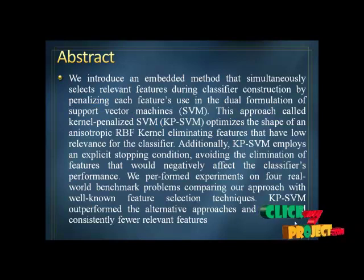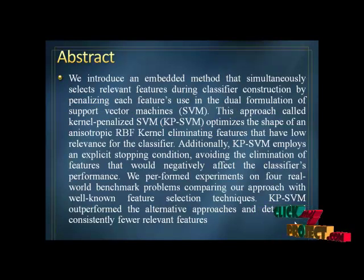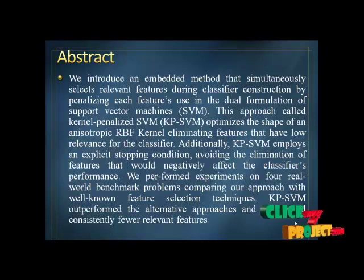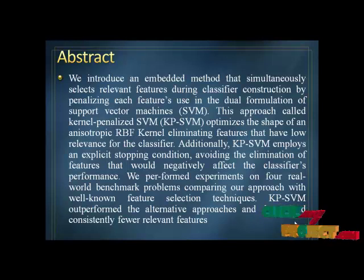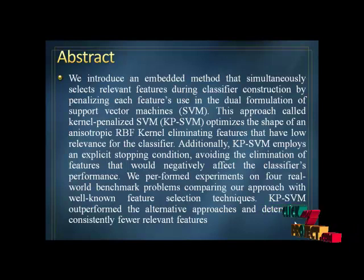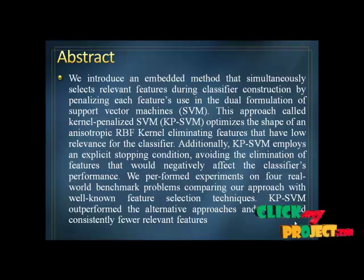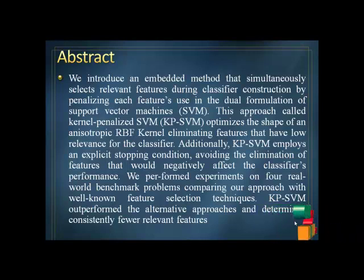We introduce an embedded method that simultaneously selects relevant features during classifier construction by penalizing each feature used in the dual formulation of support vector machines such as SVM. This approach, called kernel penalized SVM, optimizes the shape of an anisotropic RBF kernel, eliminating features that have low relevancy for the classifier.